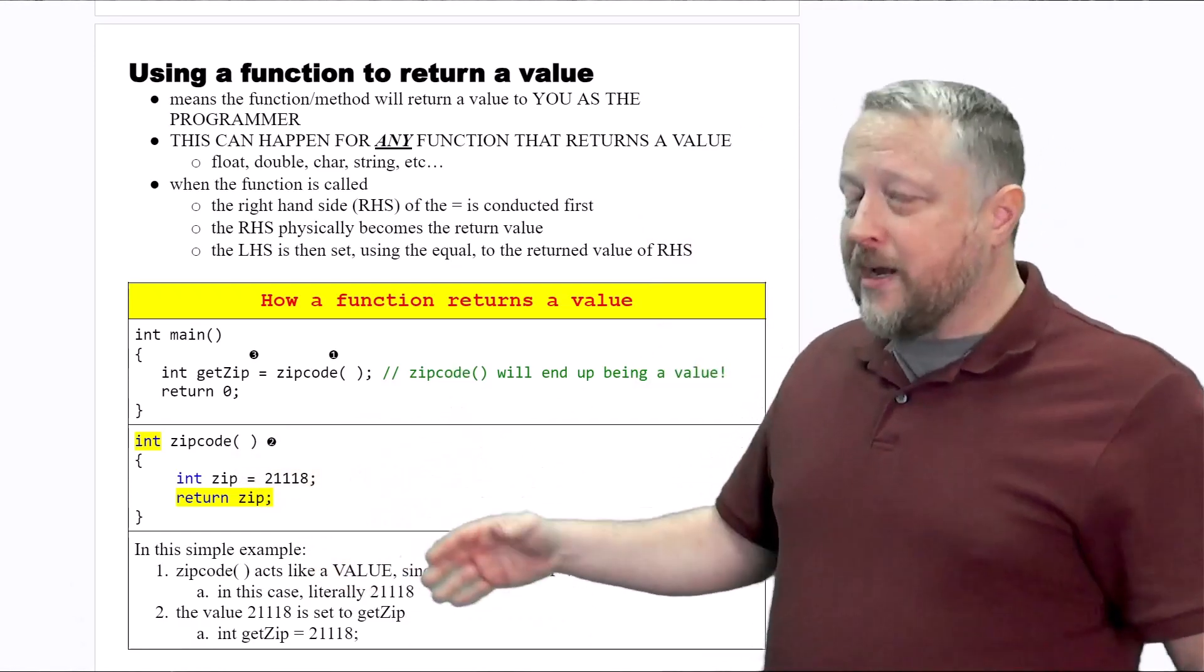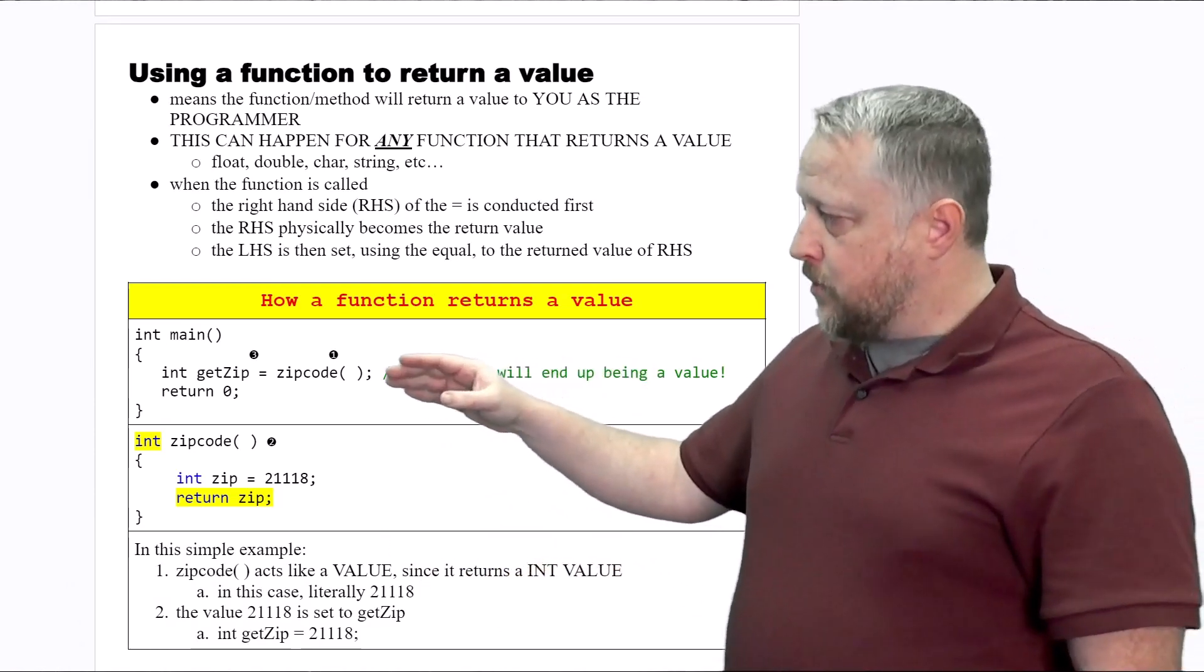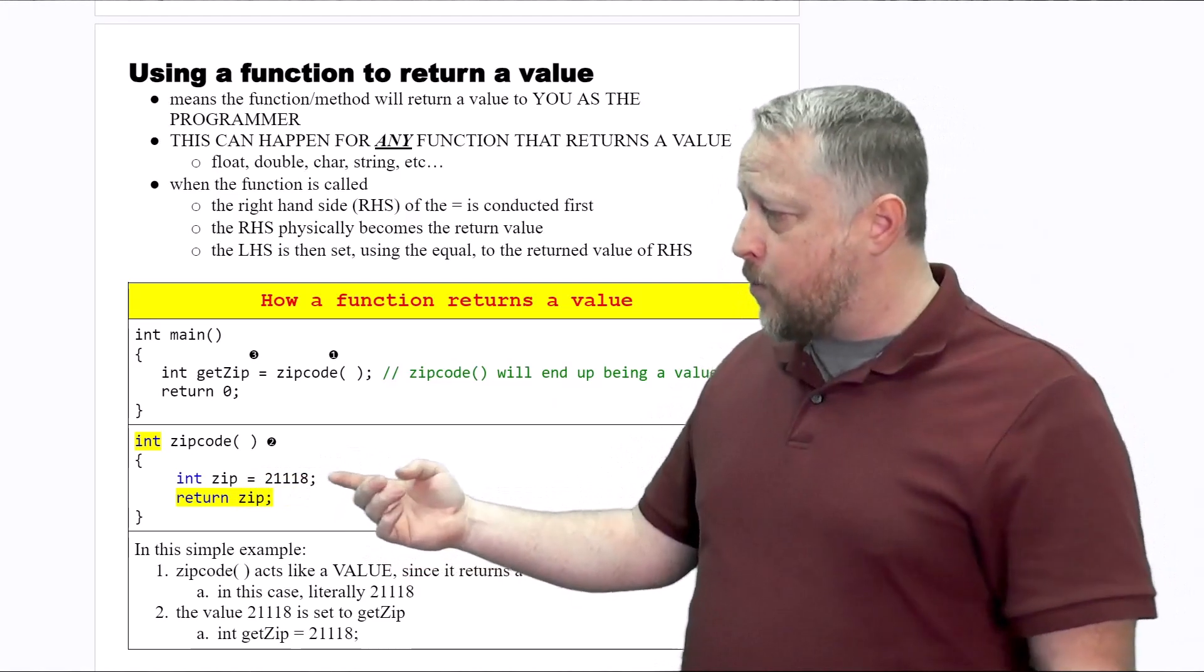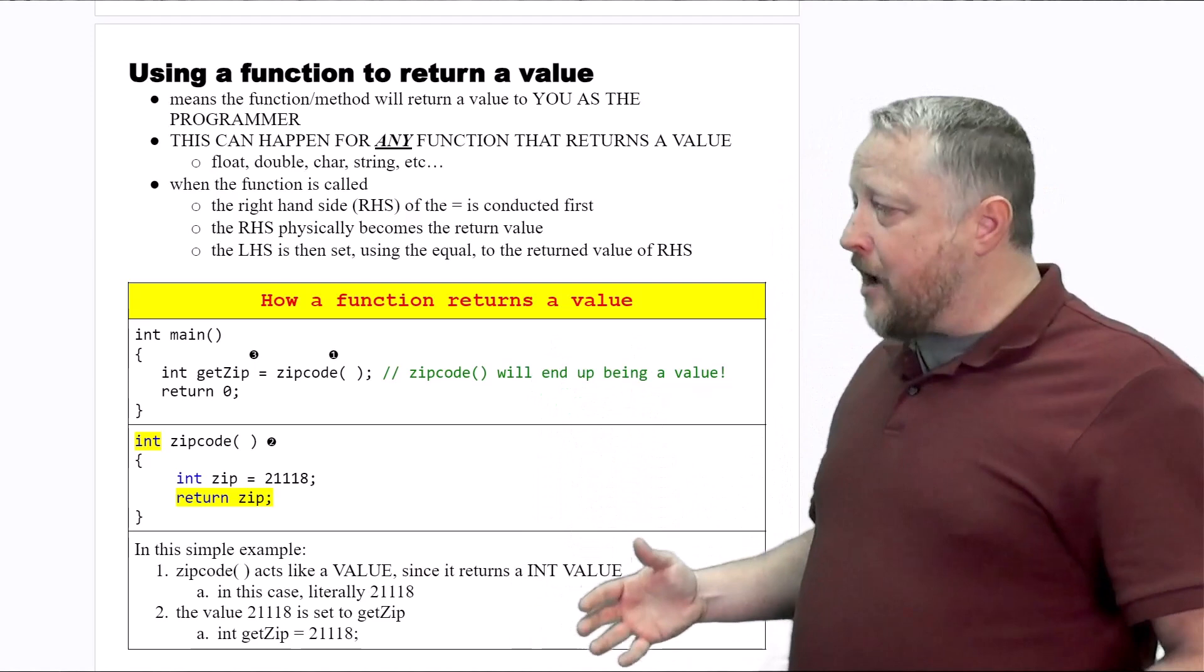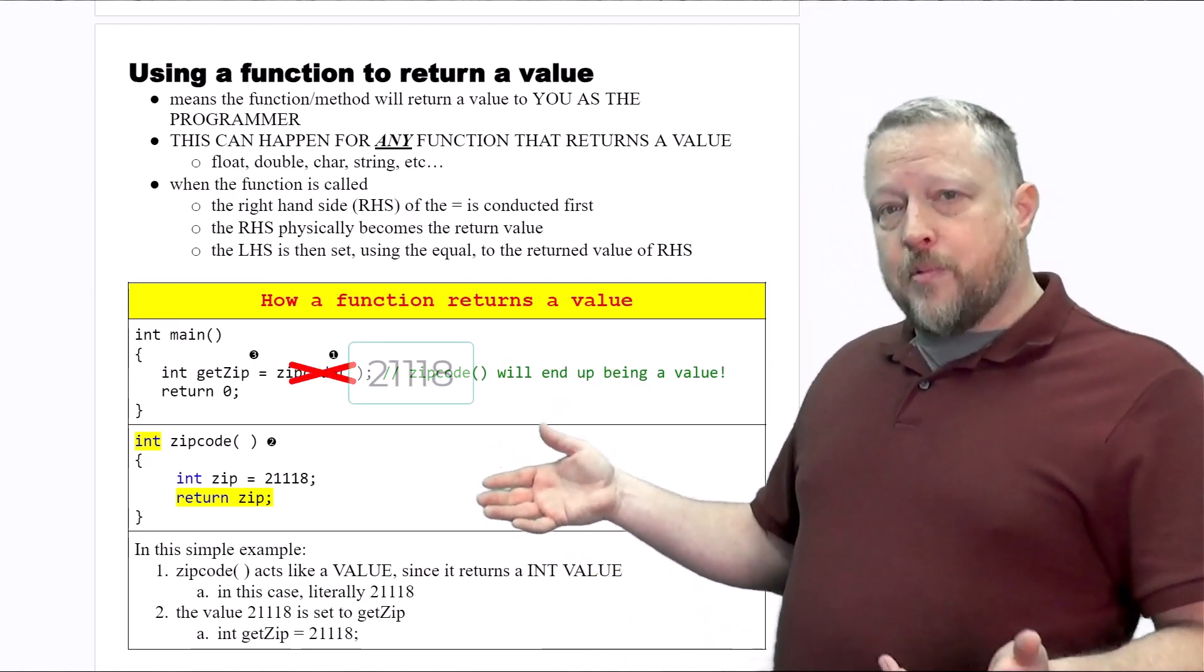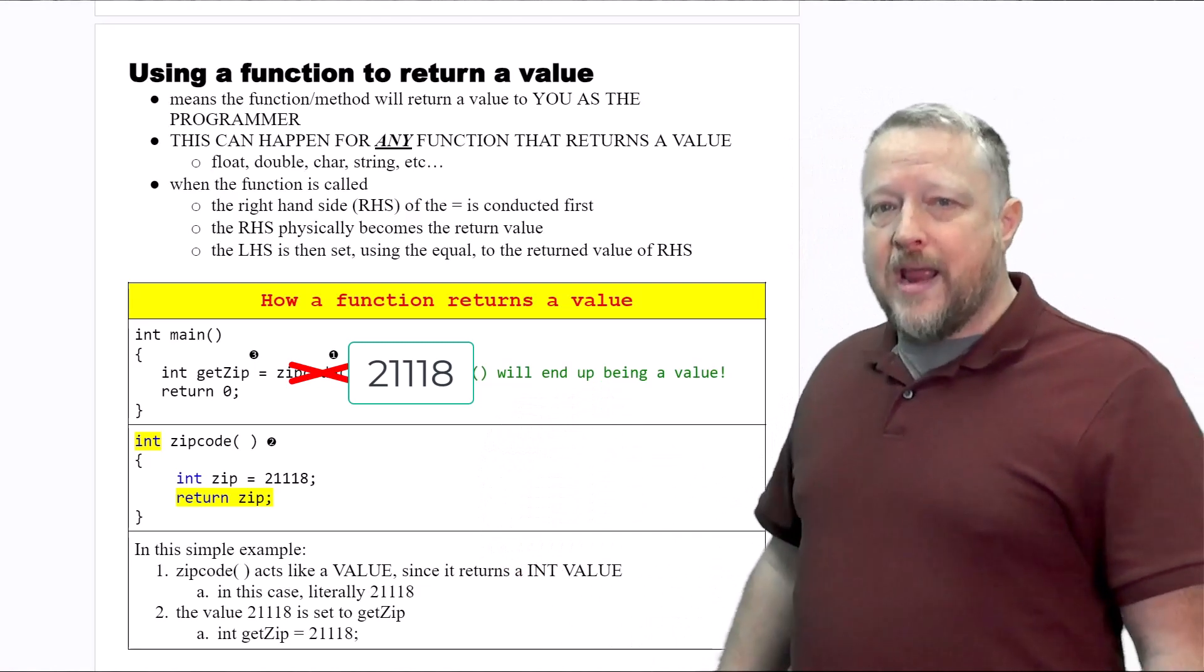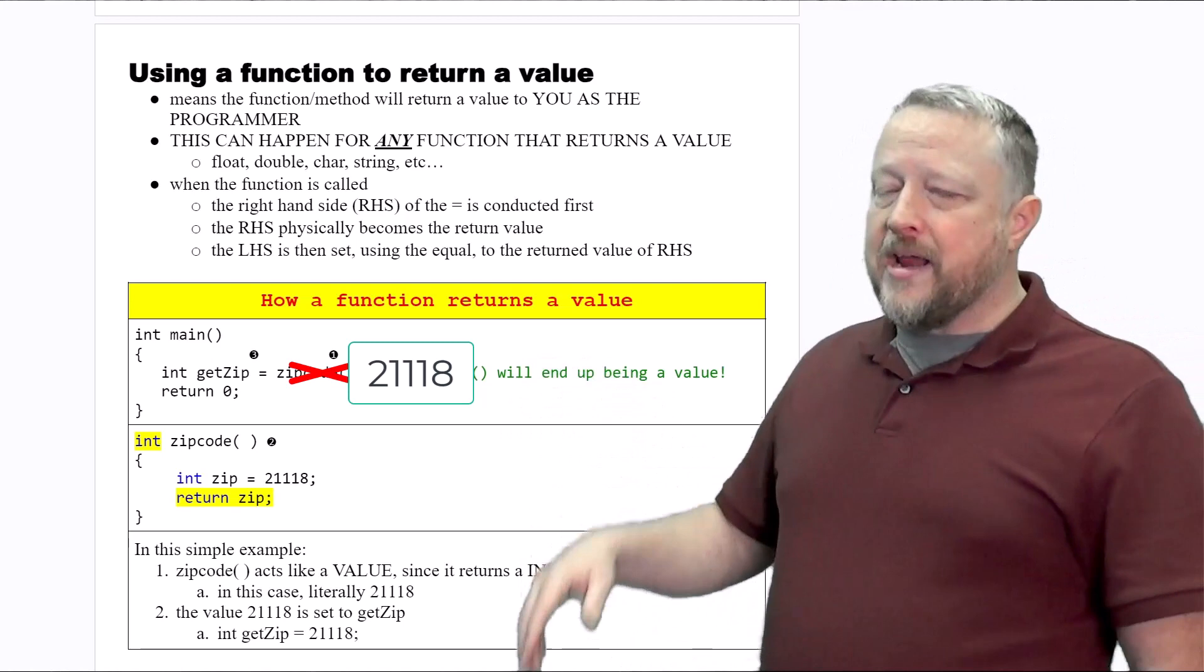Back to the overall logistics: zipcode is expecting the answer. It is going to be returning a literal value, in this case of 21118. So zipcode physically becomes the value of 21118, so now that code looks like it makes sense. We have int getZip equals 21118.